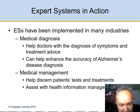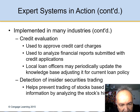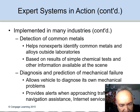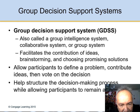Expert systems are used in many industries. For example, in credit evaluation, if a person has bad credit, the system may not approve them for another loan. There is also the group decision support system, where a group inputs the information they have and the computer helps them make a decision by showing alternatives and possible courses of action.